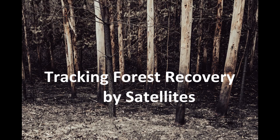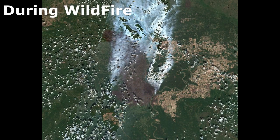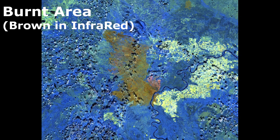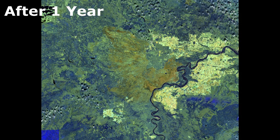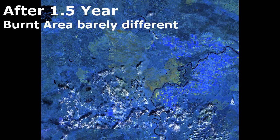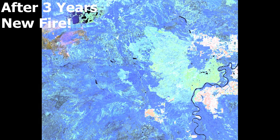Wildfires inevitably happen — that's how nature works. After the event, it's a question of how long does it take for the landscape to recover. While satellites cannot see repopulation of birds or insects, they can assess the speed of vegetation regrowth. Here is an example of regrowth of vegetation in a three-year timeframe after a wildfire.